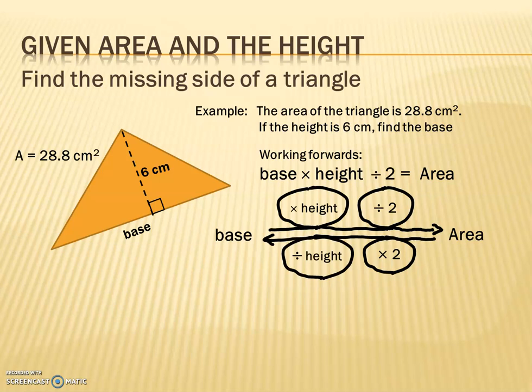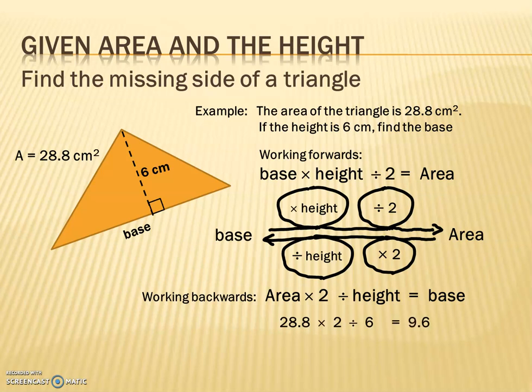What does that look like in the calculation? Area times 2 and then you divide by the height, and that's going to get us the base. In this example, 28.8 you double it, divide by the height, and it's going to work out to be 9.6 centimeters.